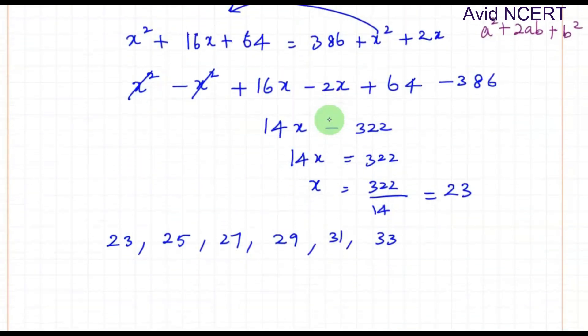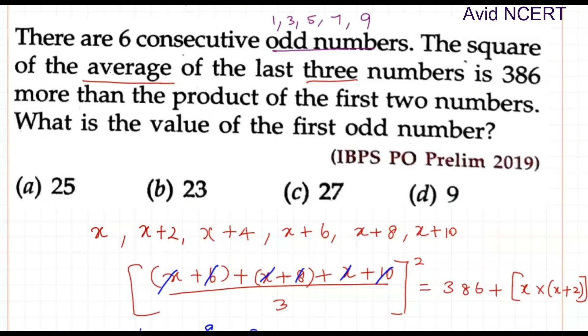The question is what is the value of first odd number? So the first odd number we have already formed, which is 23. The value of first odd number is 23. Thanks for watching. If you have any doubts, please let me know in the comments.